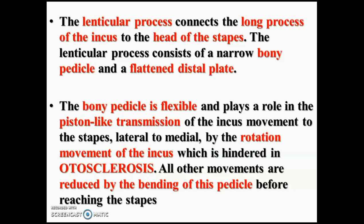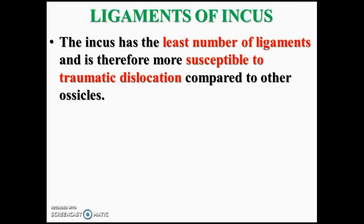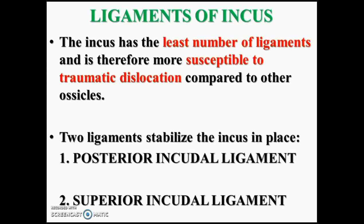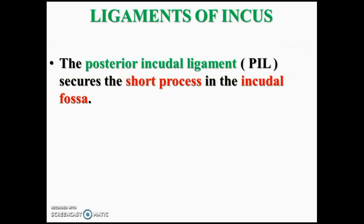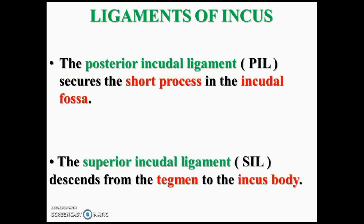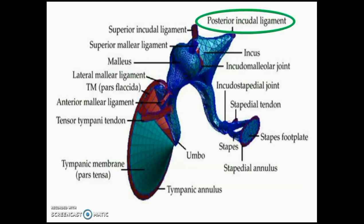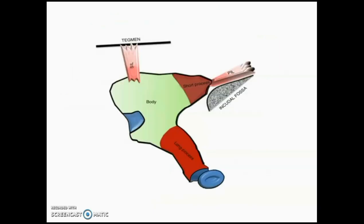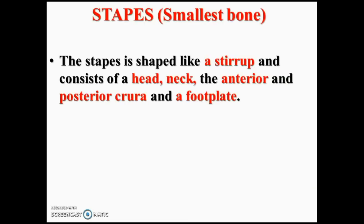This bony pedicle and bony flat plate are very important. Coming to the ligaments of the incus: the incus has the least number of ligaments, and that is why it is more prone for traumatic dislocation compared to other ossicles. The two ligaments are the posterior incus ligament and the superior incus ligament. The posterior incus ligament, also called the short suspensory ligament, attaches the short process of the incus to the incudal fossa. The superior incus ligament lies in the epitympanum and suspends the body of the incus from the tegmen tympani. Among the ossicles, the incus is most prone for dislocation because of only two stabilizing ligaments.